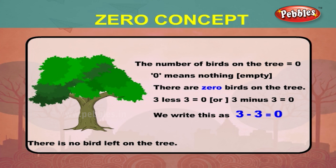Three less three is equal to zero, or in other words, three minus three is equal to zero. We write this as three minus three is equal to zero.